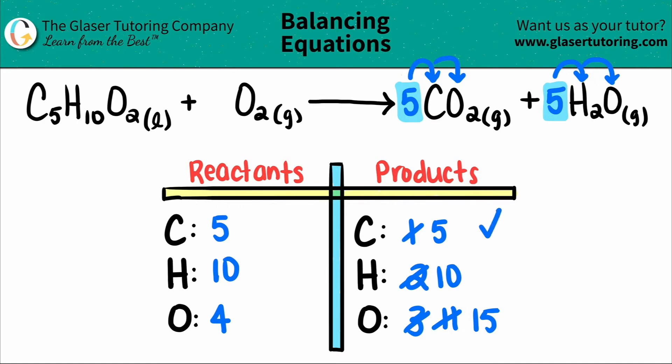The carbons are balanced and the hydrogens balanced. However, this is not a pretty number. There's nothing that I can multiply by four to get to 15 easily.